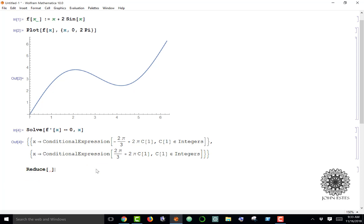I'm going to use the reduce function. I can say reduce my derivative equals zero, and I want to add an additional expression: I want 0 to be less than or equal to x, which is less than or equal to 2 pi, and then I'm going to solve that for x.